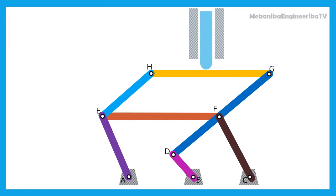In this problem, we are asked to determine the mobility of the mechanism shown here. The mechanism is built up from 9 links.